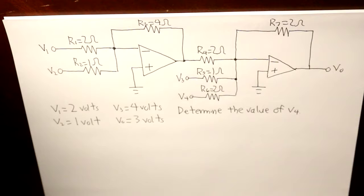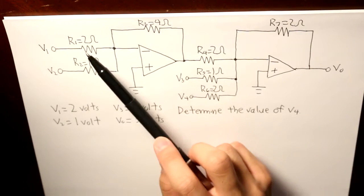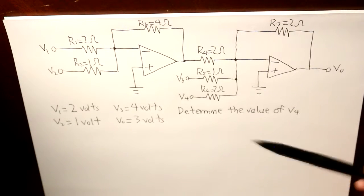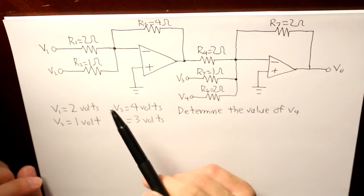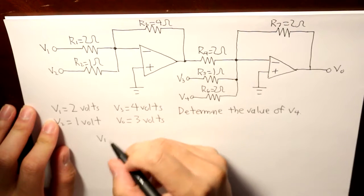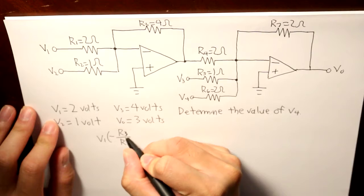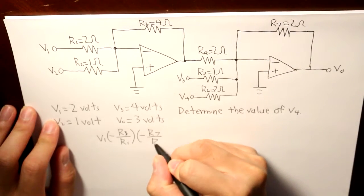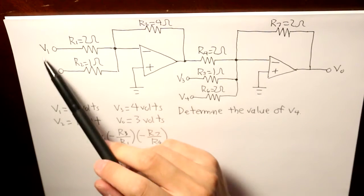Well, the answer to that would basically be, you take the input voltage, multiplied by the ratio of that, and then multiplied by the ratio again of these two resistors, and it will look like this for V1. So, V1 times negative R3 over R1, and then times negative R7 over R4, and that's how it's going to look like for V1.